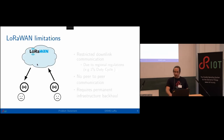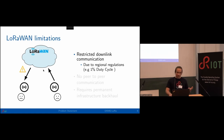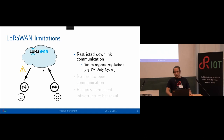However, LoRaWAN comes with its own limitations. Because of regional regulations, for instance in Europe, we can only transmit one percent of time in an observation period of one hour — meaning we cannot transmit more than 36 seconds of time on air per hour. Since gateways are shared infrastructure between all LoRaWAN applications, we would basically run out of duty cycles if all applications have downlinks. In practice, network servers limit downlinks — in the case of The Things Network, it could be up to 10 packets per node per day, which for most control scenarios is really not an option.